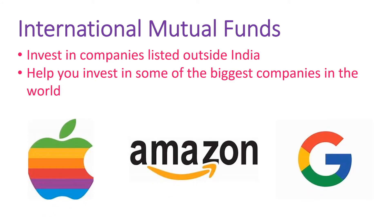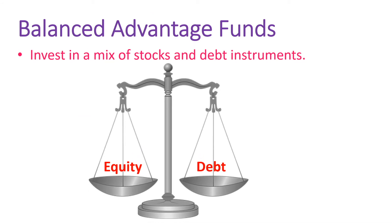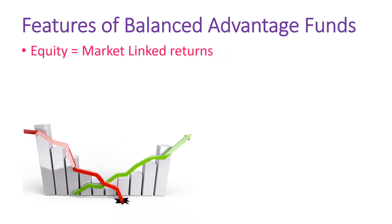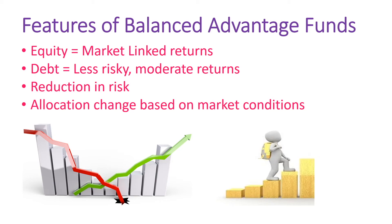The next type is balance advantage funds. Balance advantage funds invest in a mix of stocks and debt instruments. Investment in equities provides market-linked returns, while investment in debt securities is generally less risky than equity with moderate return potential. This helps reduce the overall risk of the portfolio and endeavors to limit losses during steep market corrections. They keep changing this allocation based on market conditions to provide optimal returns with minimal risk.